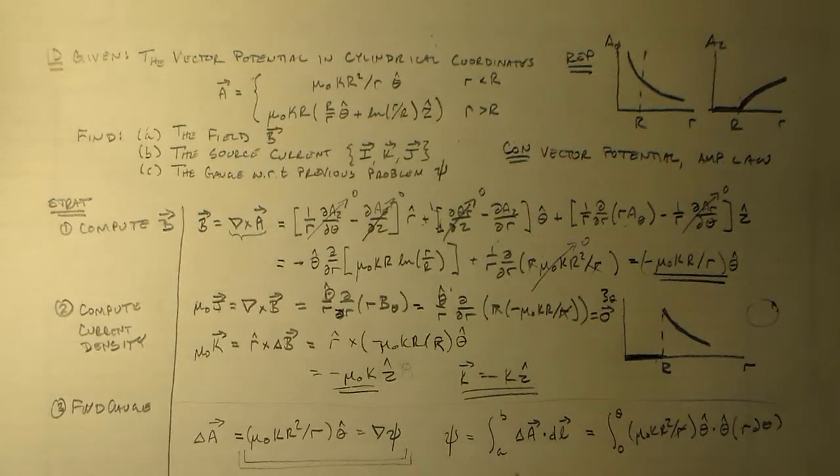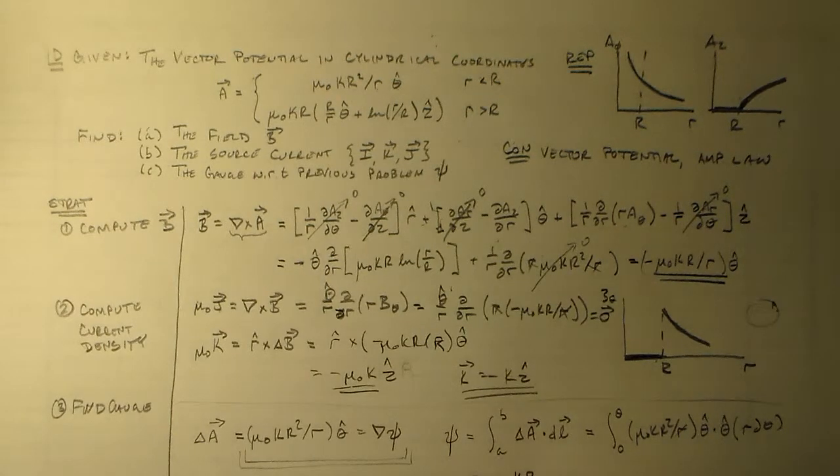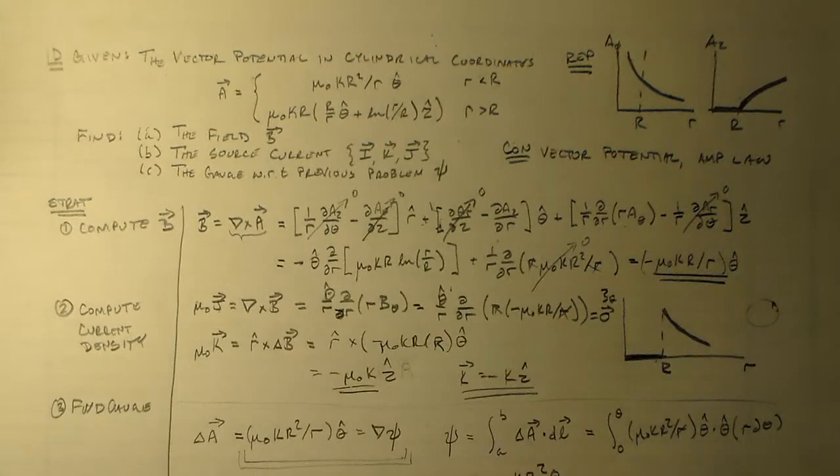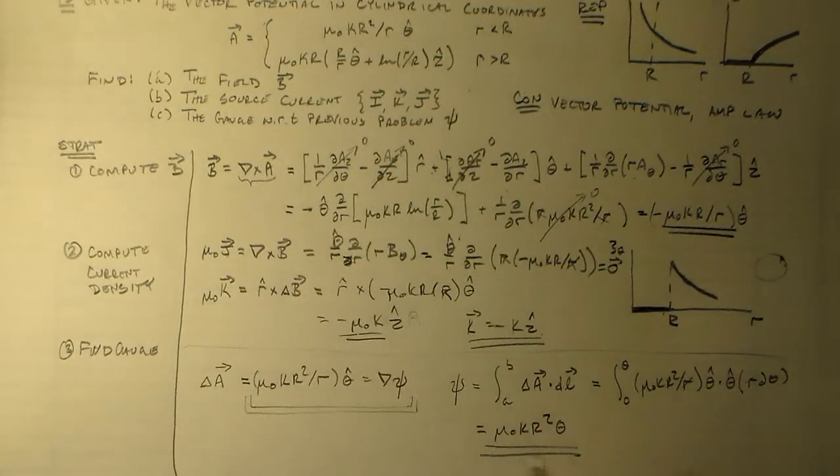So these two r's cancel. And so psi is going to be mu naught k big R squared times theta. And that's it. That's what our gauge is.